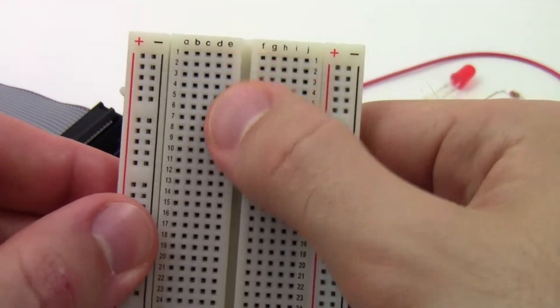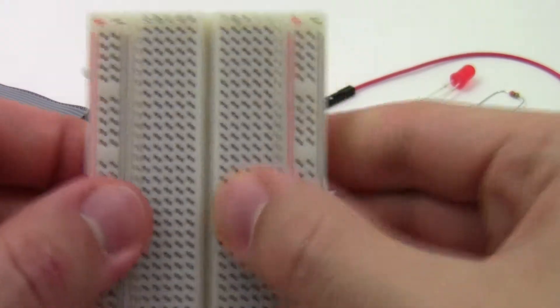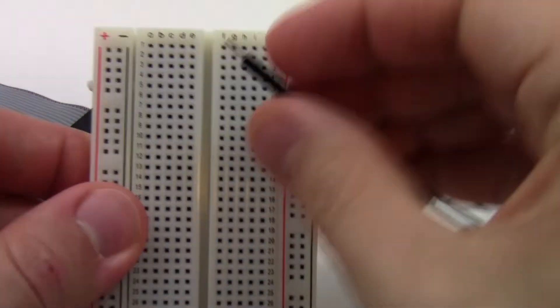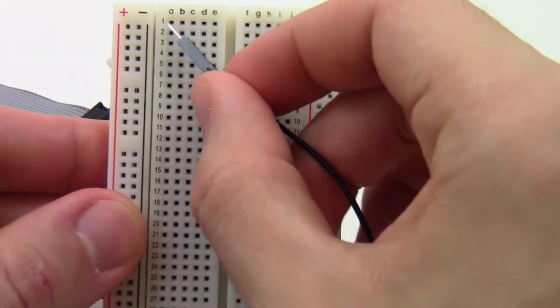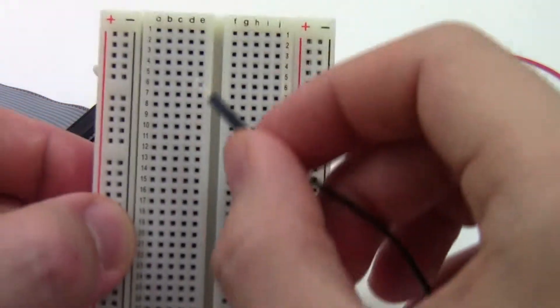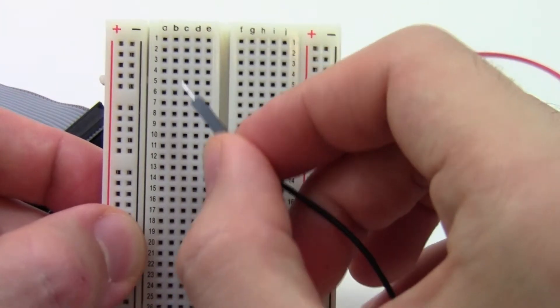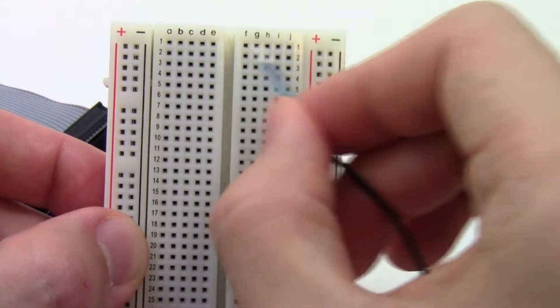If you look at the breadboard, you'll notice that it consists of a large grid of holes. The holes are labeled in rows and columns. The rows go across and are labeled with numbers from 1 to 30, and the columns go up and down and are labeled with letters from A through J.